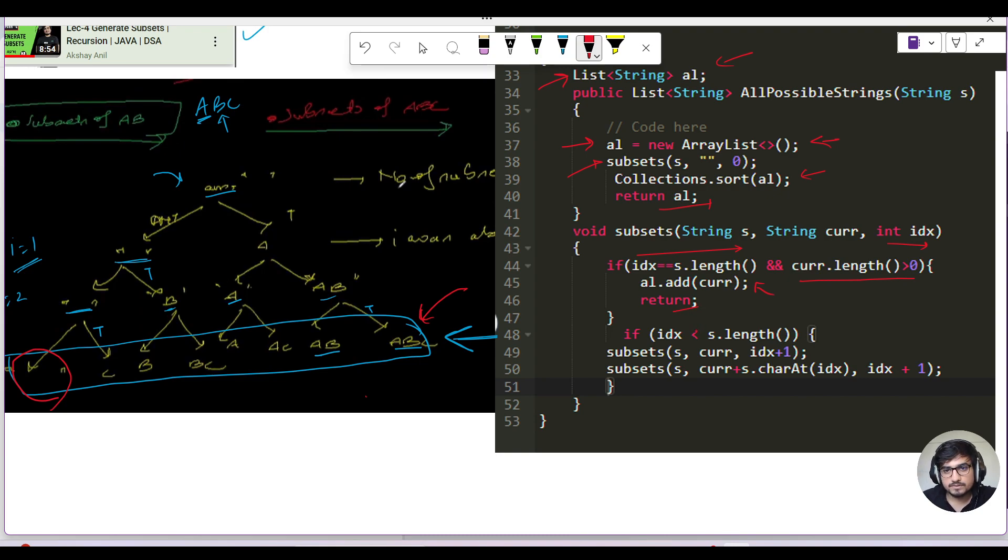For the recursive calls, we're always doing index plus one. We have a safe check: if index is less than s.length, then only do a recursive call. If we don't take it, you call the same function, pass s, pass current, and do index plus one. You don't add any characters to your current string.